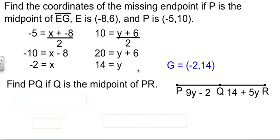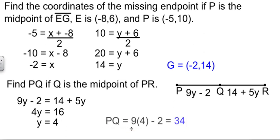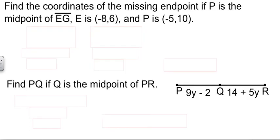Another kind of problem they can throw at us here is if they tell me Q is the midpoint, they want me to find the length from P to Q. Well, what do we know about these two segments, PQ and QR? If Q is the midpoint, this segment PQ is equal to the segment QR. So 9y minus 2 has to be equal to 14 plus 5y. Well, we can solve this. Move the 5y over and move the 2 over. Divide. So now we know how big y is, but that's not the answer to the question. They want to know how big is PQ. Well, PQ is 9 times y minus 2, 9 times 4 is 36, minus 2 is 34.